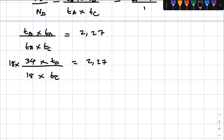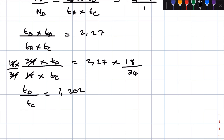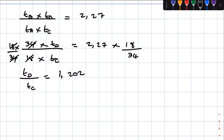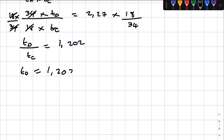Let's multiply by 18 over 34 on both sides. This cancels with that, so therefore T_D over T_C is now equal to — if you punch this in your calculators you're going to get 1.202. Then we solve for T_D by cross-multiplying: T_D is equal to 1.202 × T_C. Let's take this as equation 1.